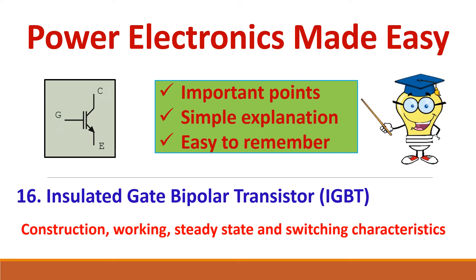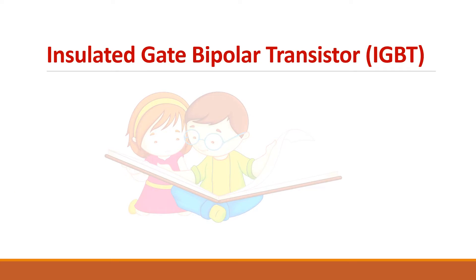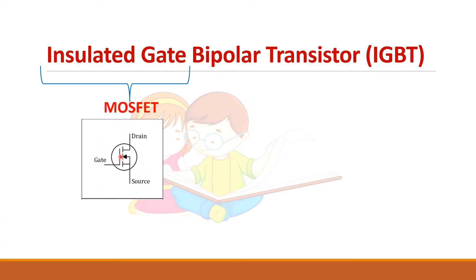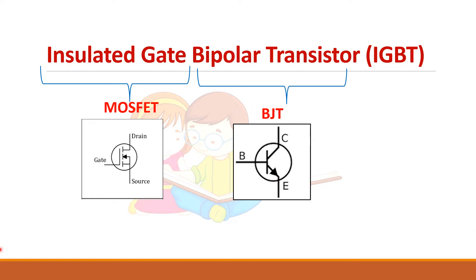IGBT stands for Insulated Gate Bipolar Transistor. As the name suggests, the insulated gate comes from the MOSFET, because MOSFET has a gate terminal which is insulated from the rest of the parts. This gives MOSFET high input impedance, which simplifies the drive circuit — that is the major advantage of a MOSFET. The second part comes from the Bipolar Junction Transistor (BJT). So IGBT is a combination of both MOSFET and BJT.